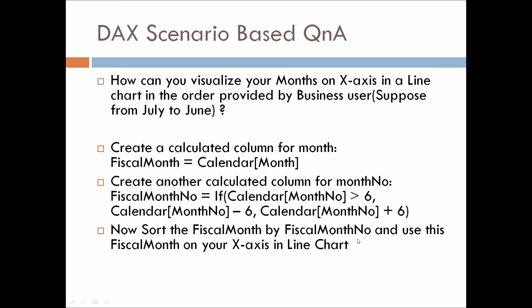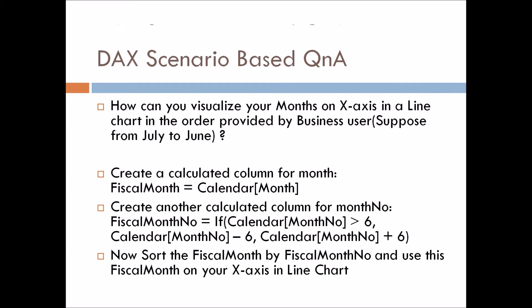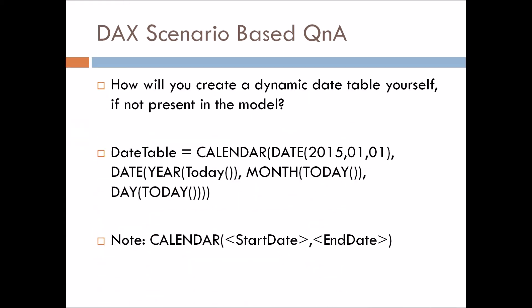Once that is done, we sort the Physical Month by the Physical Month Number, and then use this Physical Month on the X-axis in the line chart. In this way we can solve this requirement.